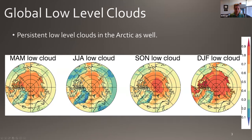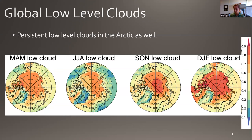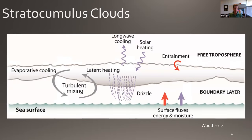What this map doesn't show very well is that we also have persistent low-level clouds in the Arctic. Here I'm showing some maps by season. In polar winter months in particular, the low cloud fraction can exceed 70, 80, 90 percent, as we saw in the subtropics. These Arctic clouds are important not only for their ability to reflect sunlight, but there's also been quite a bit of discussion about their impact on the surface energy balance and their links to sea ice melt. When I say low-level clouds today, I'm primarily talking about stratocumulus rather than cumulus clouds.